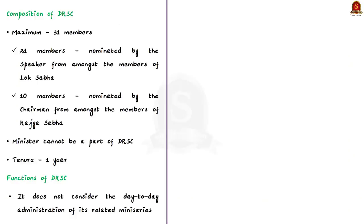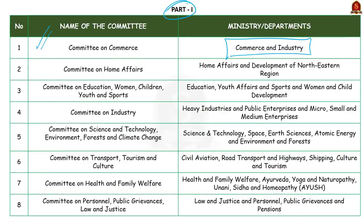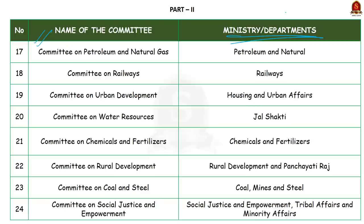Each DRSC consists of a chairman and a maximum of 31 members. For the first eight DRSCs listed in Part One, the chairman is appointed by the Chairman of Rajya Sabha. For the remaining 16 DRSCs listed in Part Two, the chairman is appointed by the Speaker of Lok Sabha. This is an important distinction.